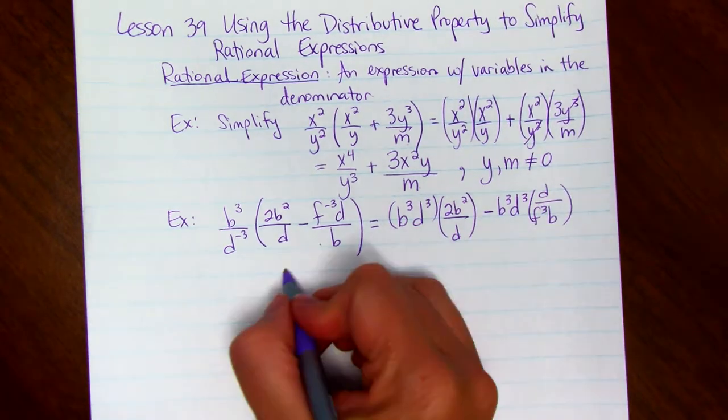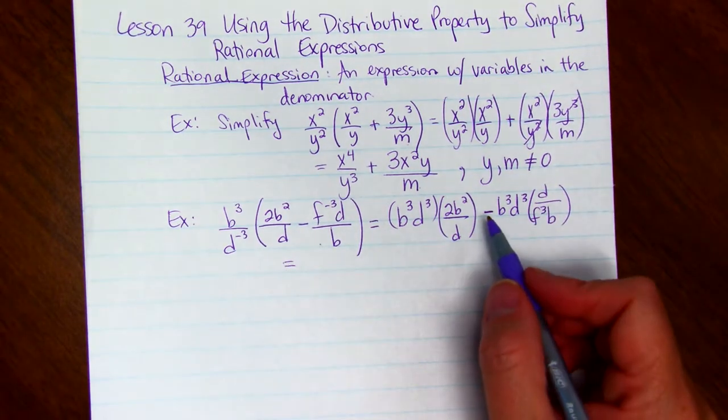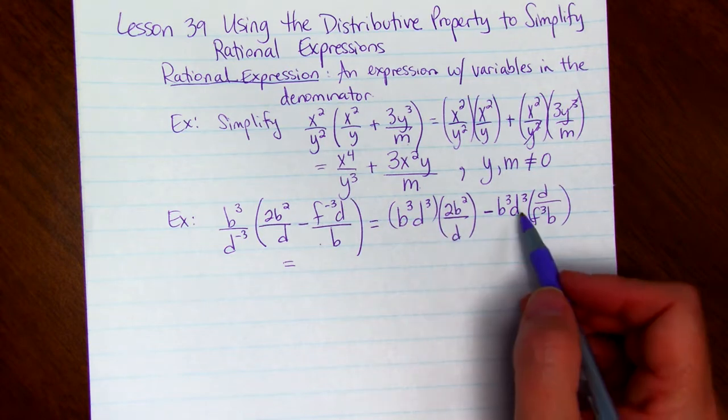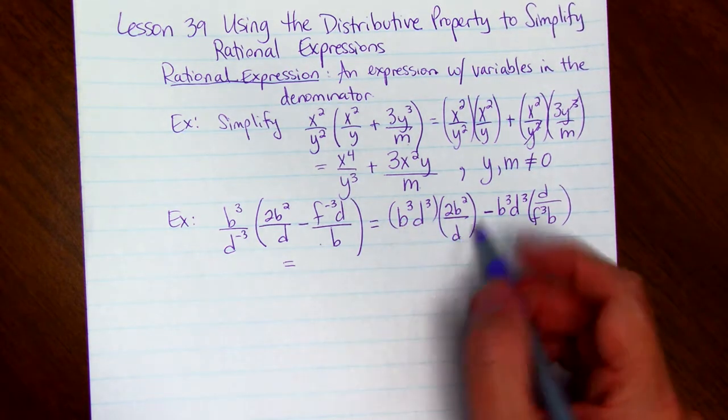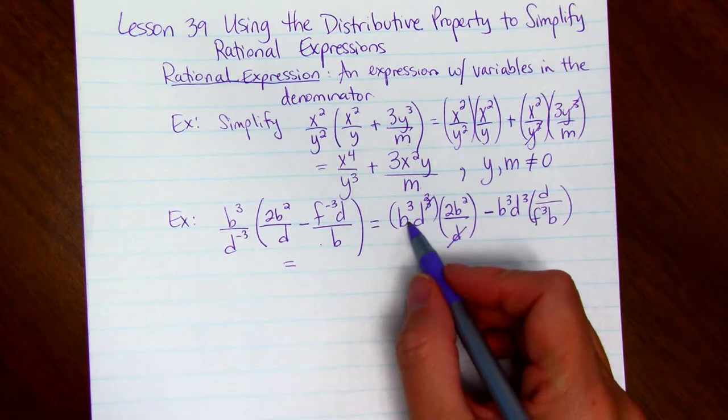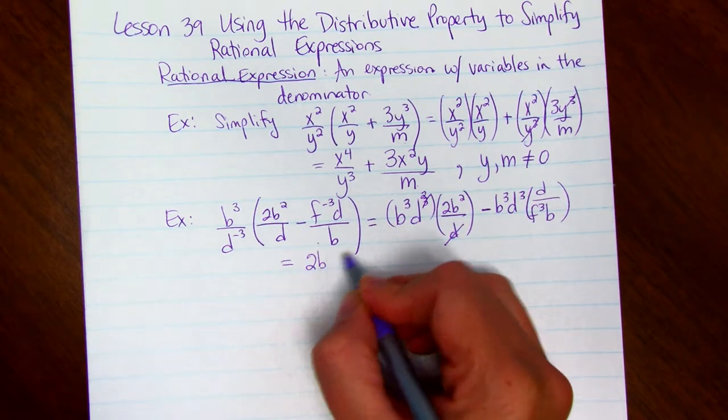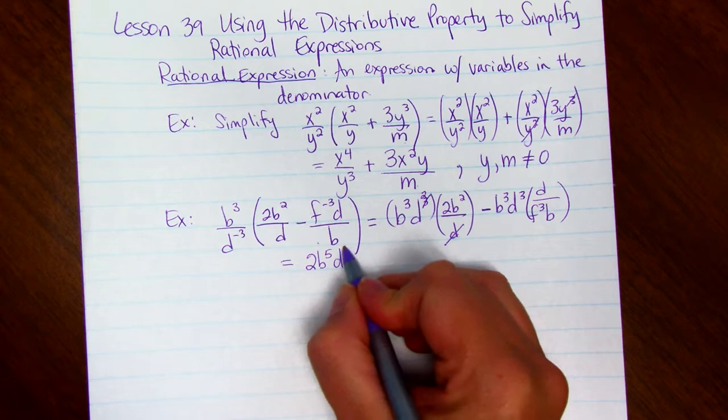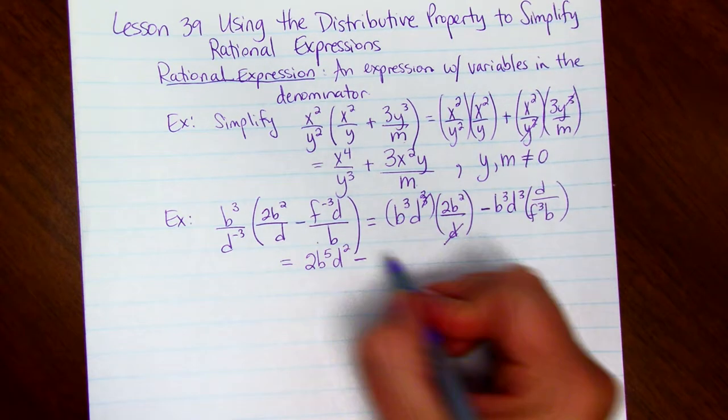We simplify each of these, the minuend and subtrahend. We can cancel one of the d's to get d squared. So we have 2b to the 5th d squared. So we can add the exponents on the b's. Minus,